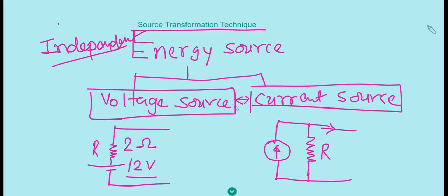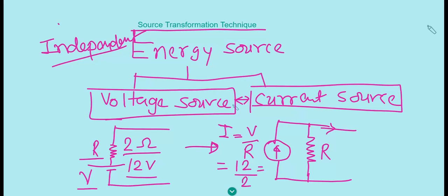Suppose you have a 12-volt voltage source with an internal resistance of 2 ohms and you want to convert that into a current source. By using Ohm's law you can find I = V/R, so voltage is 12 and resistance is 2, giving 6 amperes. The resistance stays the same. So you can say that a 6-ampere current source in parallel with a 2-ohm resistance is equivalent to a 12-volt voltage source in series with a 2-ohm resistance.